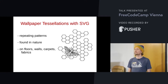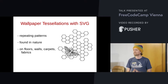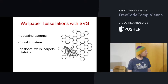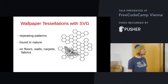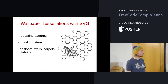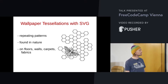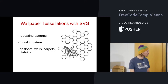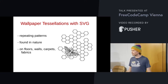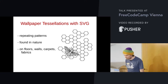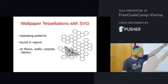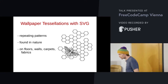So what are wallpaper tessellations, actually? That's what you're gluing on the wall. These are repeating patterns found in nature, and you see them on the floor, on the toilet, in the bathroom, maybe on your shirt, on the internet. And this is a sample tessellation, like honeycomb.